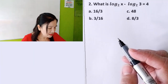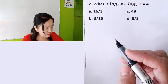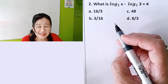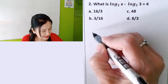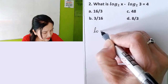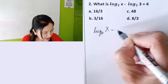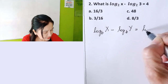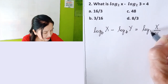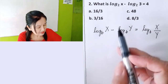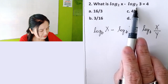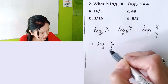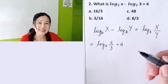Problem number two: what is log of x base 2 minus log of 3 base 2, equals 4? In this case we have to review the laws of logarithms. There is a law which states that log of x base b minus log of y base b is simply equal to log of x over y base b. Applying it here: log of x base 2 minus log of 3 base 2 equals log of x over 3 base 2, equals 4.